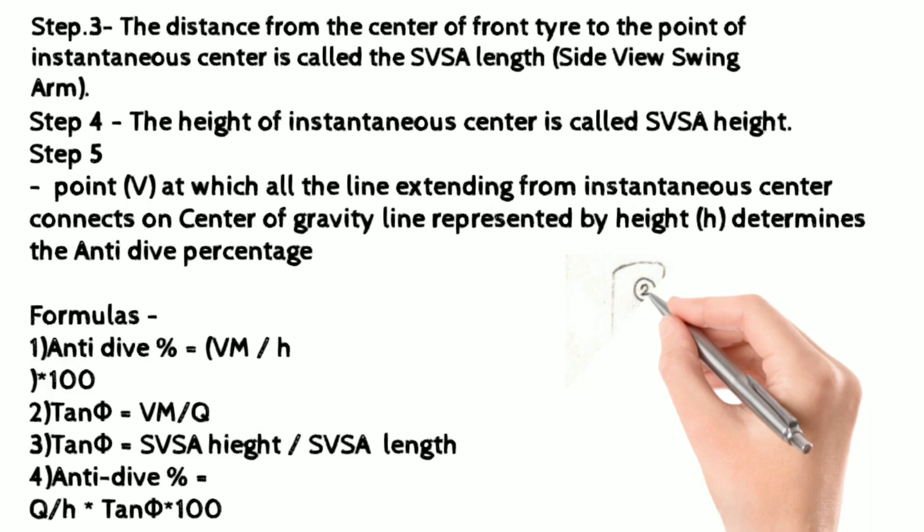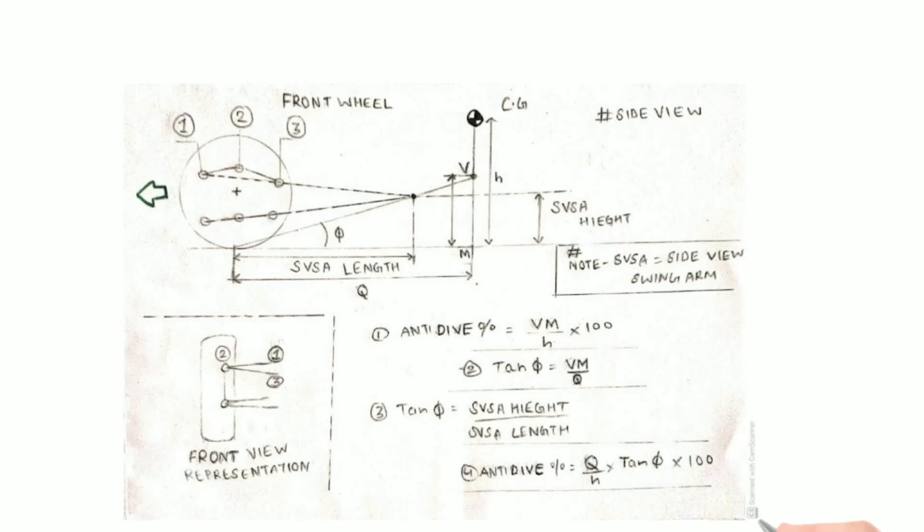The formulas are given as: anti-dive percentage = tan(φ), and the anti-dive percentage is represented as (q/h) × tan(φ) × 100. In this image, all the design details of the anti-dive suspension geometry and the basic calculations are noted — you only have to substitute the values for calculating the anti-dive percentage.